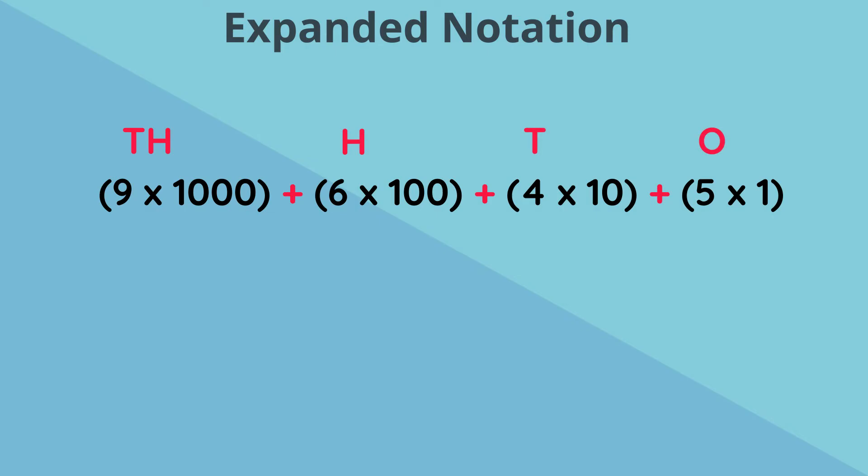So that means 9 represents 9000, 6 represents 600, 4 represents 40, and 5 represents 5, giving us 9645.